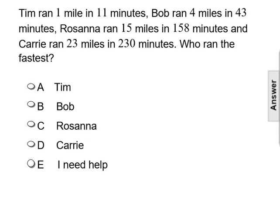Tim ran 1 mile in 11 minutes, Bob ran 4 miles in 43 minutes, Rosanna ran 15 miles in 158 minutes, and Carrie ran 23 miles in 230 minutes. But who ran the fastest?